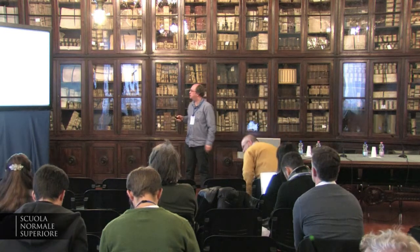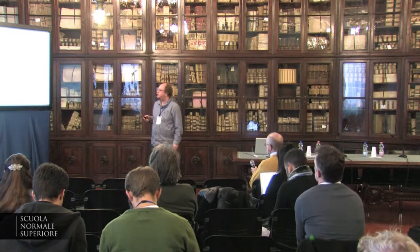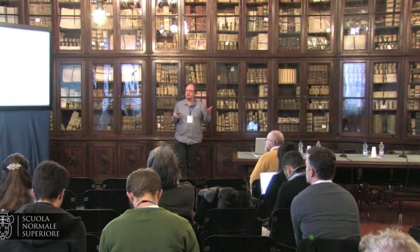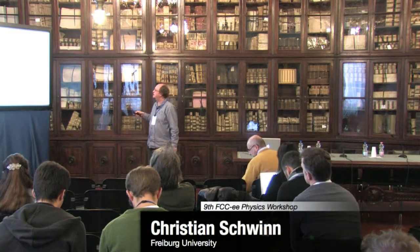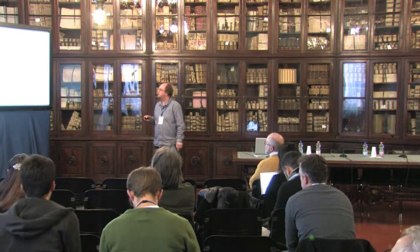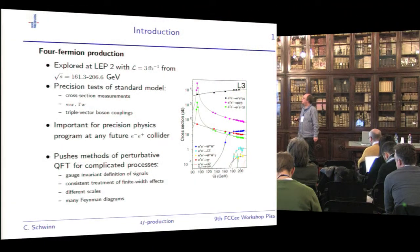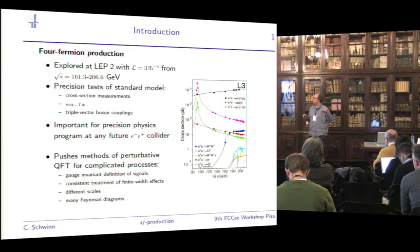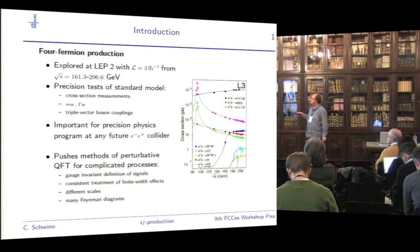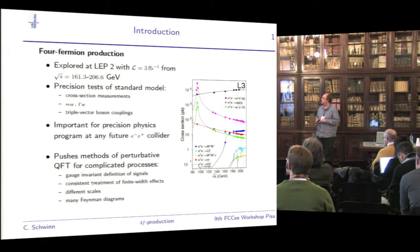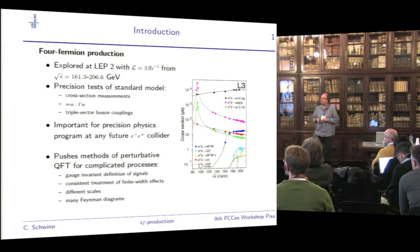I was asked to give a brief review of the theory status for fermion production in e-plus e-minus colliders. That's a very important process class. It was investigated at LEP2 in the energy range from the W pair production threshold up to about 207 GeV, and it has been used for an impressive set of precision tests of the standard model. Cross-section measurements are precision measurements because they test quantum field theory at very high accuracy.